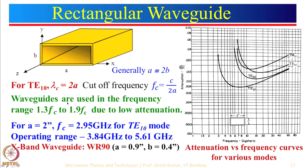Generally waveguides are not used just immediately above the cutoff frequency. For example, consider a waveguide where a = 2 inches and b = 1 inch. Then λc = 2 × 2 = 4 inches. Converting to centimeters and using fc = c/λ, the cutoff frequency comes out to be 2.95 GHz for the TE10 mode.